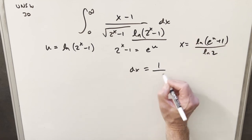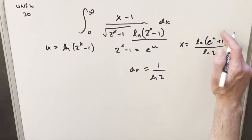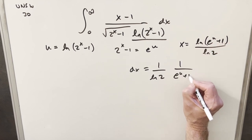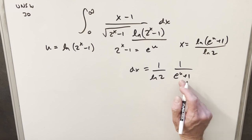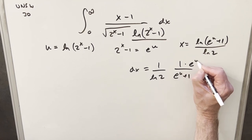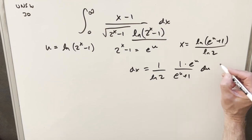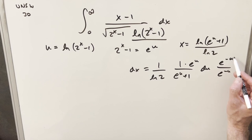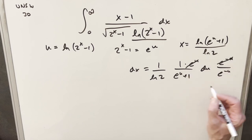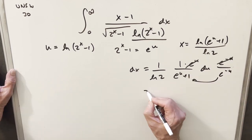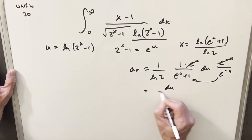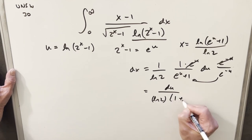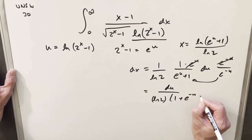Now I want to take my derivative of x and find our dx value. I'm going to take the natural log of 2 out front. The derivative of natural log of e to the u plus 1 gives us e to the u plus 1 in the denominator, and the derivative of that piece gives us e to the u in the numerator. Multiplying by e to the minus u on numerator and denominator, we get du over natural log 2 times 1 plus e to the minus u.